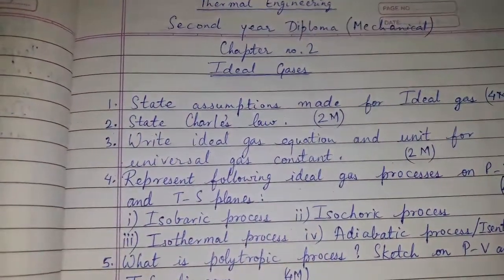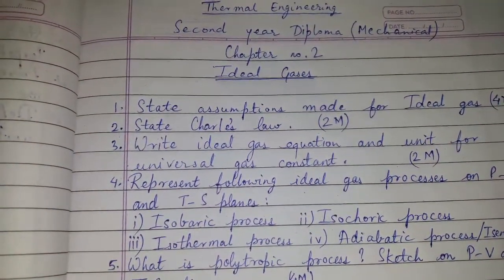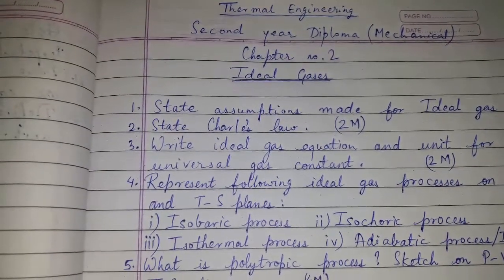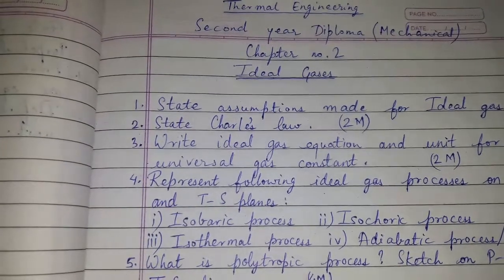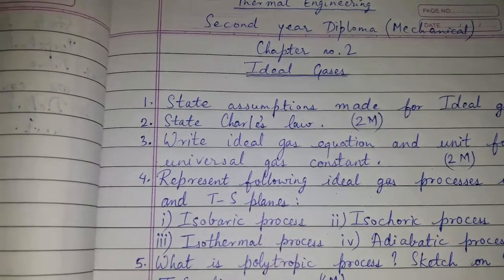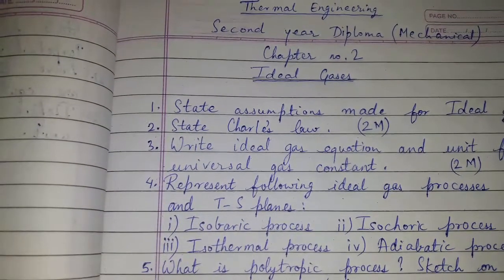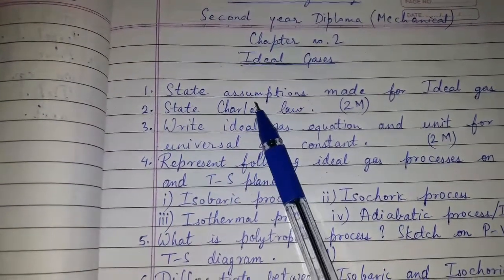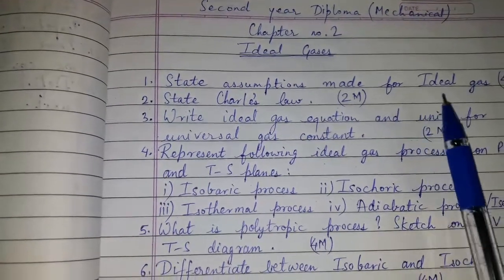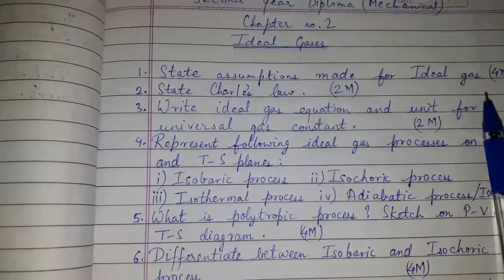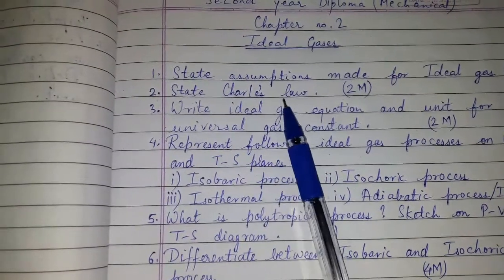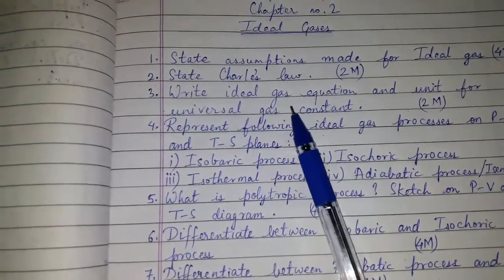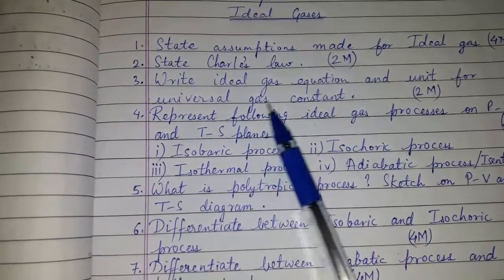Today's topic of discussion is the question bank, or the type of questions asked for Chapter 2, Ideal Gases, for second-year diploma mechanical engineering. The subject is Thermal Engineering. Questions include: state assumptions made for ideal gas, asked for four marks; state Charles' law for two marks; and write the ideal gas equation and unit for universal gas constant for two marks.